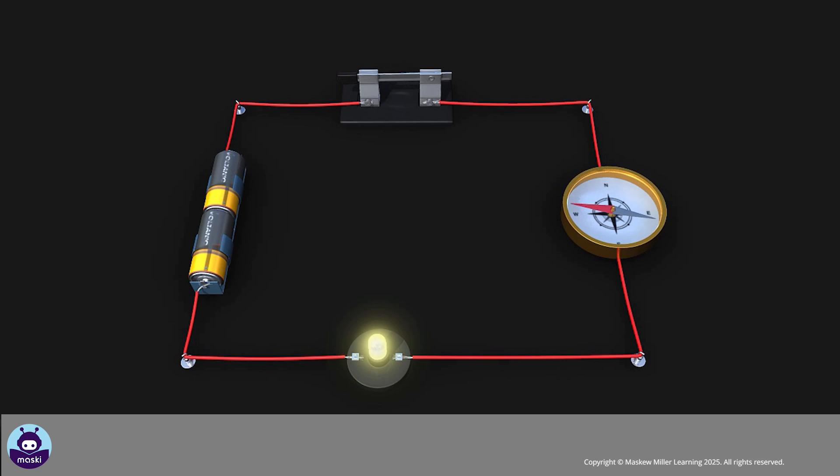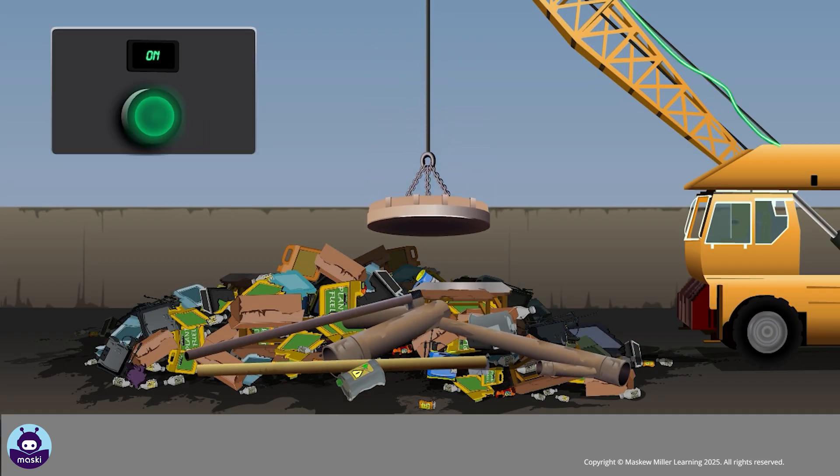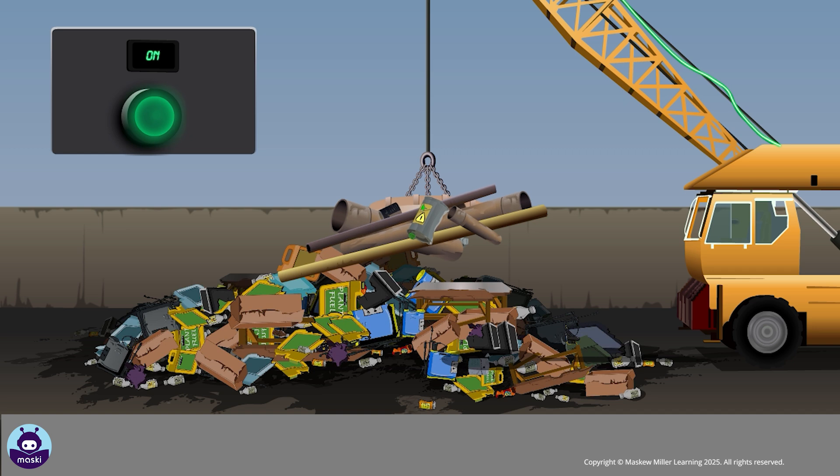The needle will deflect. This is because there's a magnetic field around the current-carrying wire. The magnetic effect of an electric current is used for making temporary magnets known as electromagnets. An electromagnet is a temporary magnet.